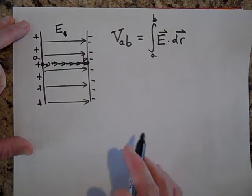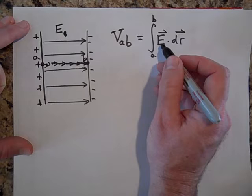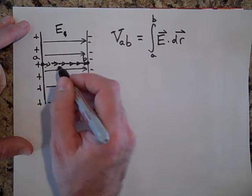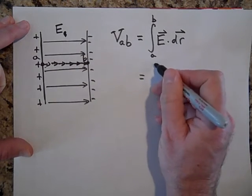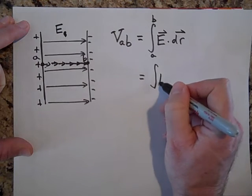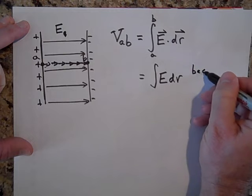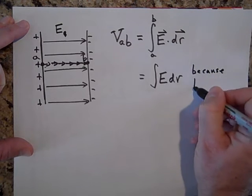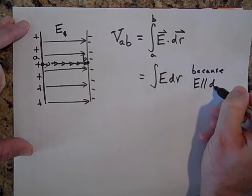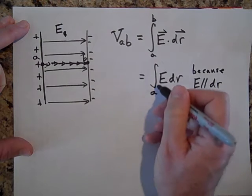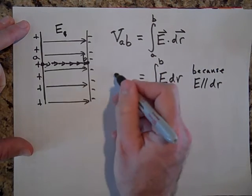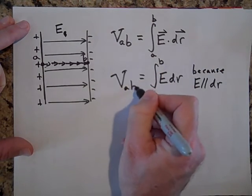Okay. So, the first thing I can do is I can see that the E and the DR are in the same direction. So I'm going to pull out the E. All right. No, I'm going to get rid of the dot product first. And that's because E is parallel to DR. Okay.